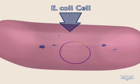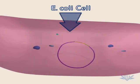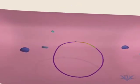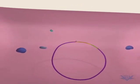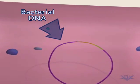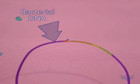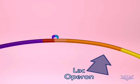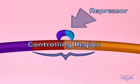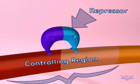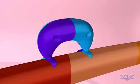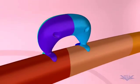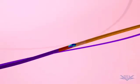Gene expression can be induced or turned on when a specific inducer molecule appears in a cell. For inducible systems, a repressor molecule prevents gene expression by binding to the upstream controlling region. Lactose is the lac operon inducer molecule.